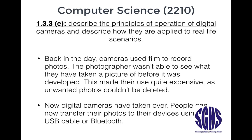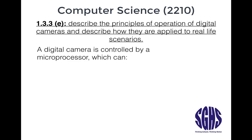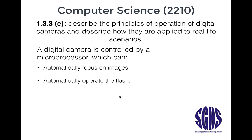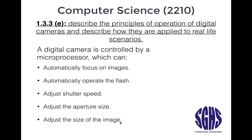Nowadays, digital cameras have taken over. People can not only delete their photos, but they can also transfer them to their devices using a USB cable or Bluetooth. A digital camera is controlled by a microprocessor, which can automatically focus on images, automatically operate the flash, adjust the shutter speed, adjust the aperture size, adjust the size of the image, and remove red-eye.